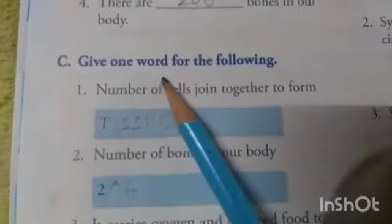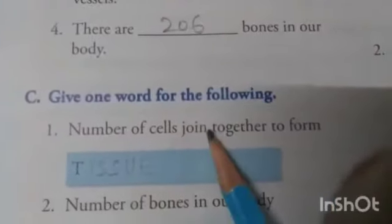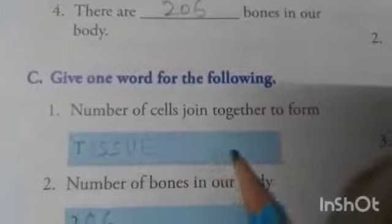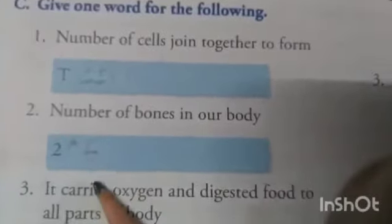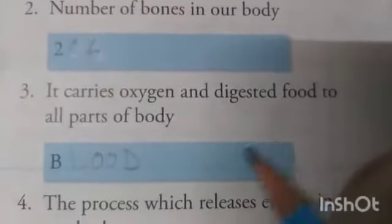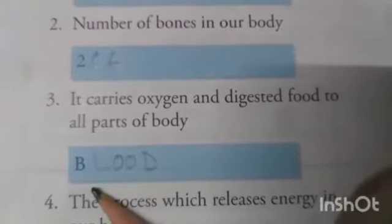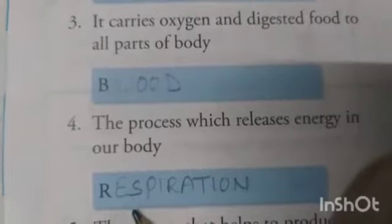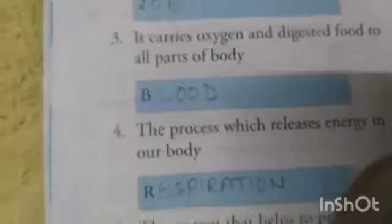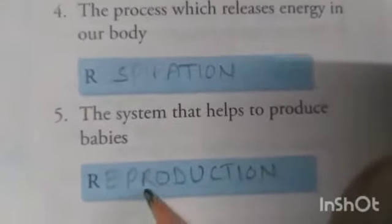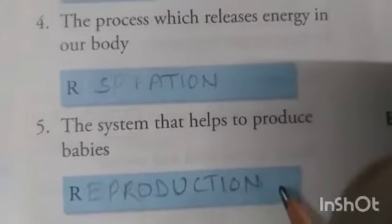Question C is give one word for the following. First: a number of cells joined together to form — tissue (T-I-S-S-U-E). Second: number of bones in our body — 206. Third: it carries oxygen and digested food to all parts of the body — blood (B-L-O-O-D). Fourth: the process which releases energy in our body — respiration (R-E-S-P-I-R-A-T-I-O-N). Fifth: the system that helps to produce babies — reproduction (R-E-P-R-O-D-U-C-T-I-O-N).